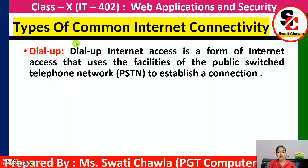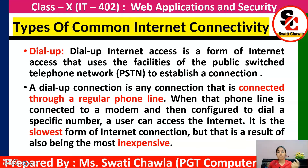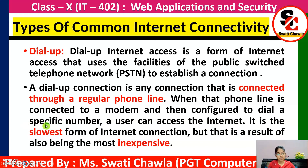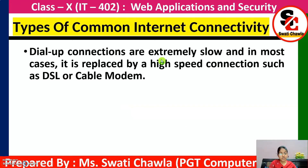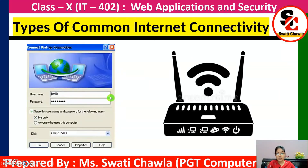First is dial-up. Dial-up internet access is a form of internet access that uses the facility of PSTN — Public Switched Telephone Network — to establish a connection. The modem connects through a regular phone line. When that phone line is connected to a modem and configured to dial a specific number, a user can access the internet. It is the slowest form of internet connection but also the most inexpensive one.